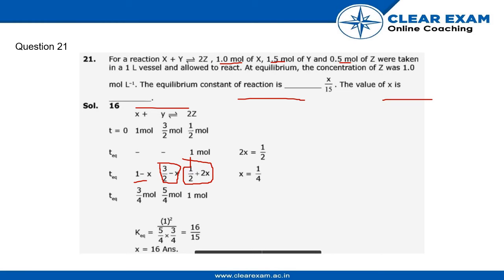Now, as we know at equilibrium z is 1 mole, which is given in the question. On comparing 0.5 + 2x (which is 1/2 + 2x) with 1 mole, we get x = 1/4.